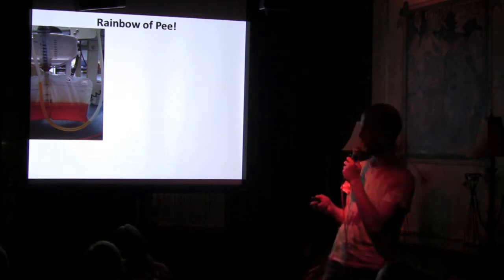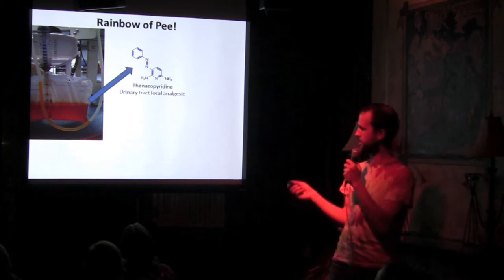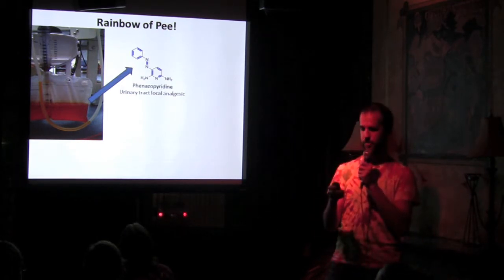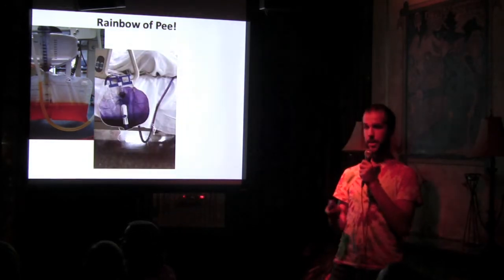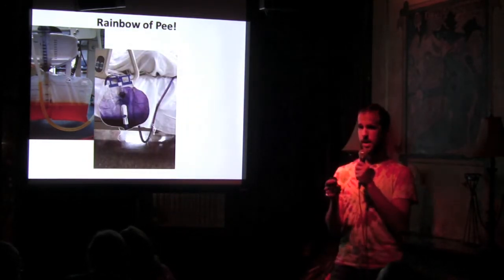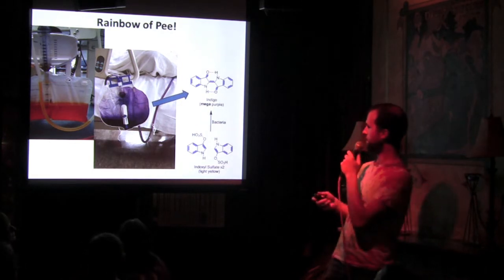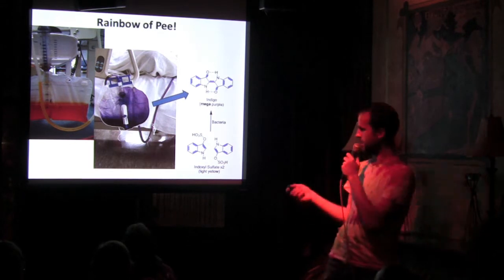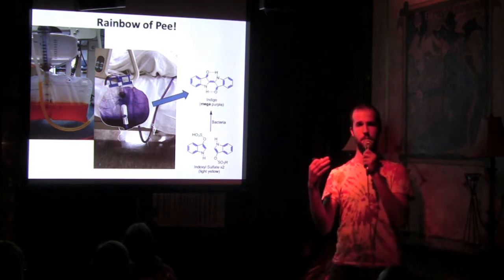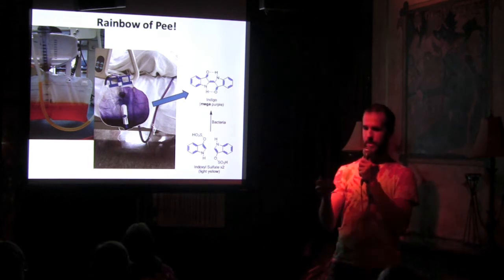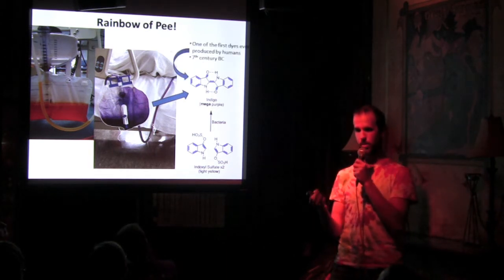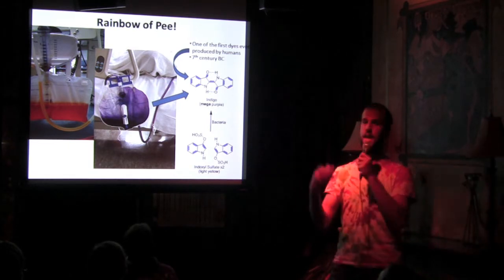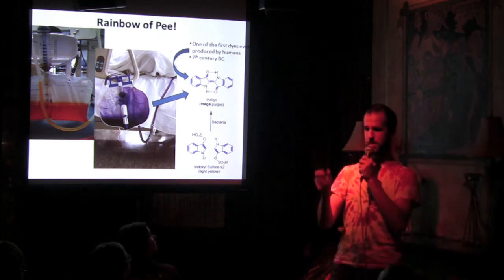And your pee can be an insane variety of colors. It can be this crazy orange color due to a number of different drugs. This one is a urinary tract local analgesic, so you pee it out, and it kind of numbs your whole urinary tract. And then it can also be purple. This one is really cool. So this is actually due to a bacterial infection in your urinary tract, taking these two molecules, it couples them together to make a chemical called indigo. You may have heard of indigo. Indigo is a super famous molecule. It was one of the first dyes ever synthesized by human beings in 7th century BC, and it can sometimes happen in your body, which is pretty mind-melting.